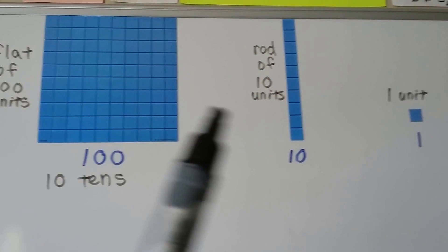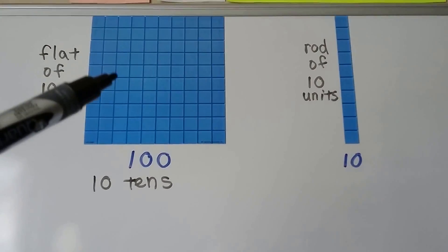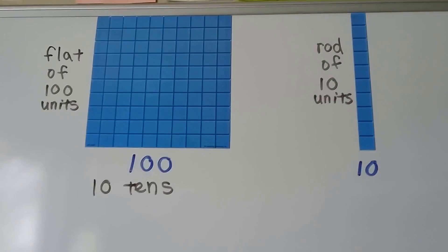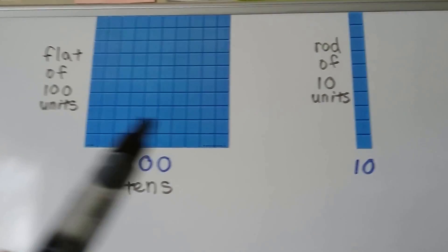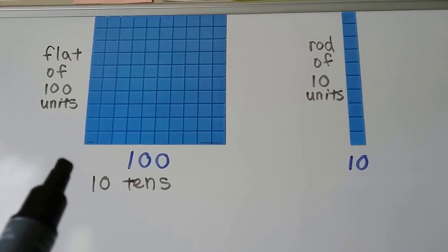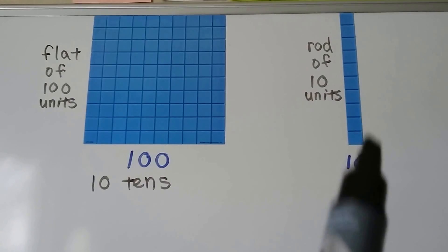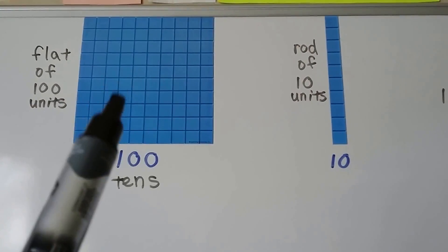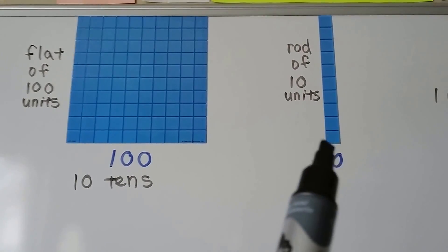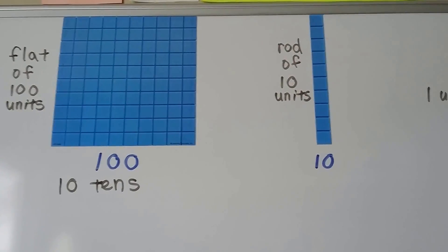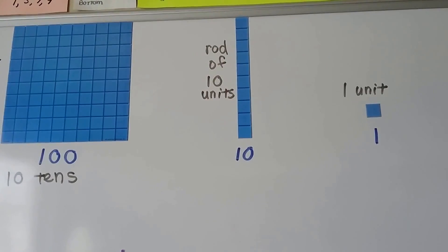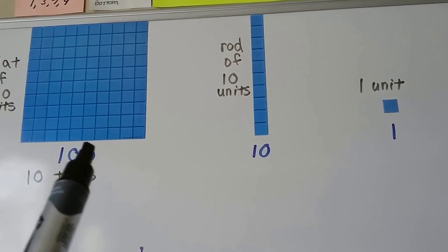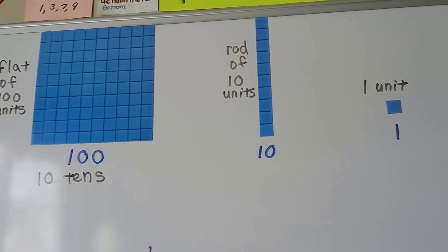We're going to be using these models to help us. When you see a big model like this, this is a flat of 100 units — there are 100 little squares here. It's the same thing as 10 tens. This is a rod of 10; there are 10 squares here. We need 10 rods to make one flat of 100. And here's the little one unit. We have one unit, 10 in a rod of 10, and 100 in a flat of 100.